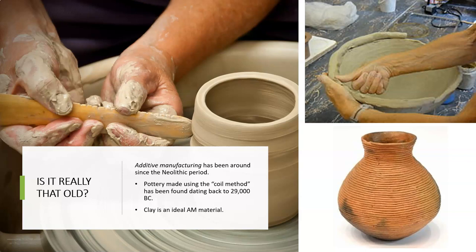The basis of additive manufacturing is adding material in a sequential layer-by-layer manner to create a three-dimensional object. This process has basically been around since the Neolithic period. There is pottery found using the coil method, which is an additive method. You can see the example of this pottery here — using coils to build up to create a vase. This pottery has been found dating back to 29,000 BC.